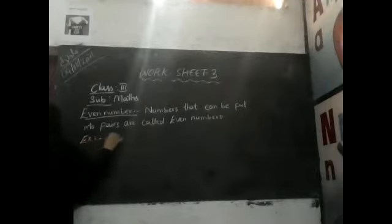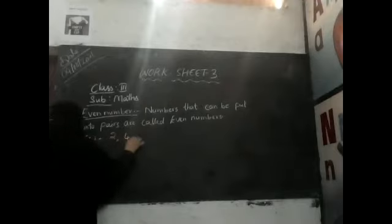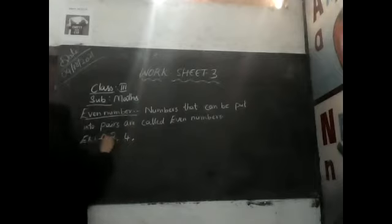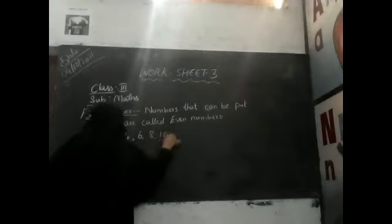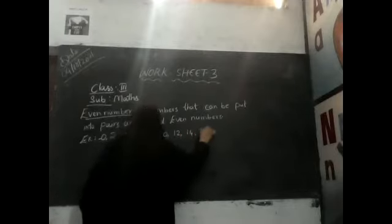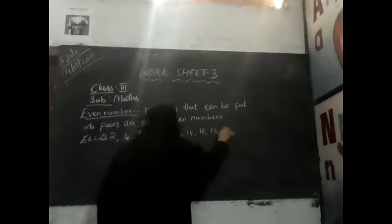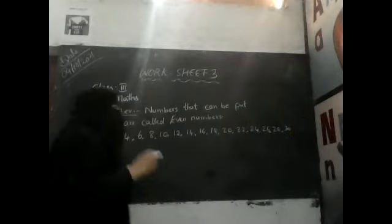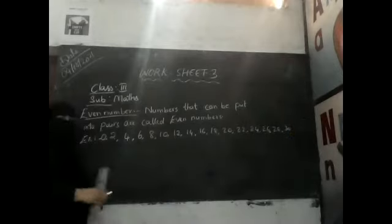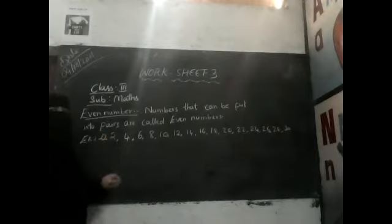Let us see the examples: 2, 4, 0, 2, 4, 6, 8, 10, 12, 14, 16, 18, 20, 22, 24, 26, 28, 30, etc. Till thousands we can make even numbers. Numbers that can be put into pairs are called even numbers.